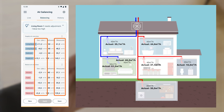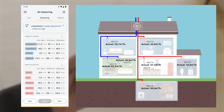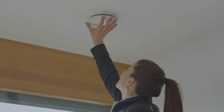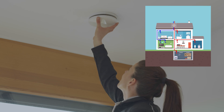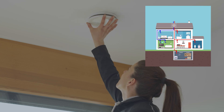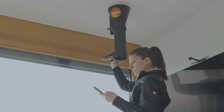A particular advantage of the application is the specific recommendation for action. This indicates which outlet is to be adjusted in each measuring round. The defined outlet in Living Room 1 is adjusted on the basis of the recommendation — the valve must be adjusted to reduce the volume flow.